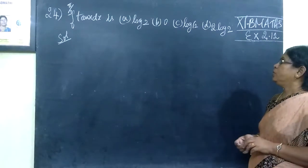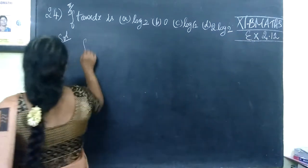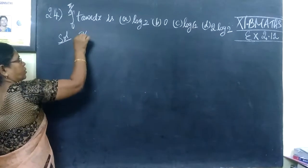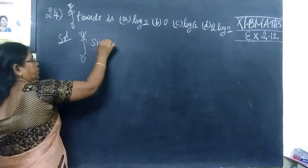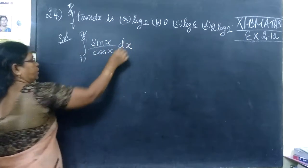Log 2, 0, log of root 2, then 2 log 2. Now, for tan x, we integrate 0 to 5π/3, sin x over cos x dx.